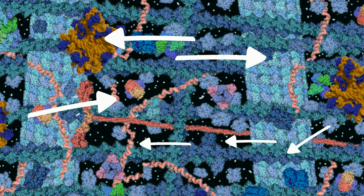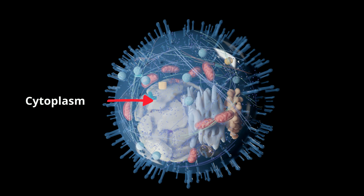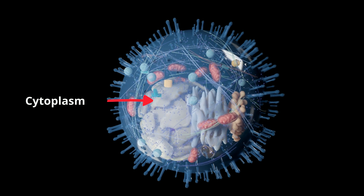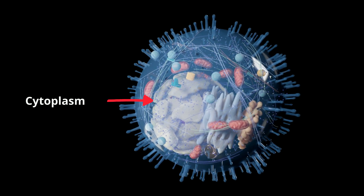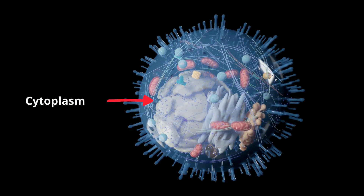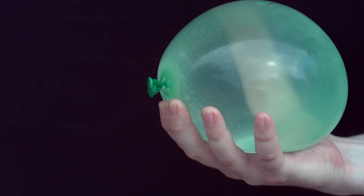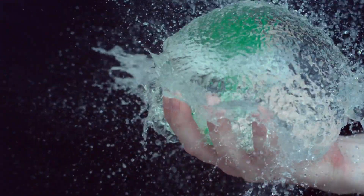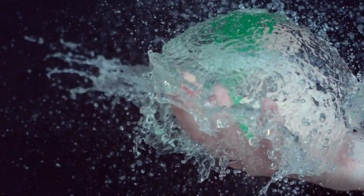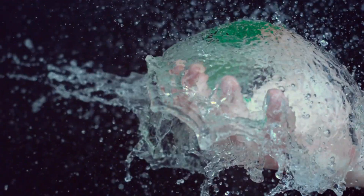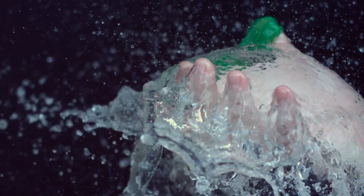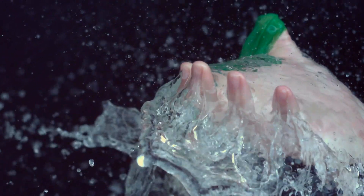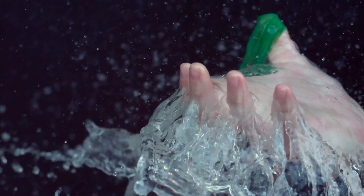Along with the cytoskeleton, the cytoplasm also helps give the cell its shape — think of the difference when you fill up a balloon with water. Without cytoplasm, the cell would be deflated and materials would not be able to pass easily from one organelle to another.